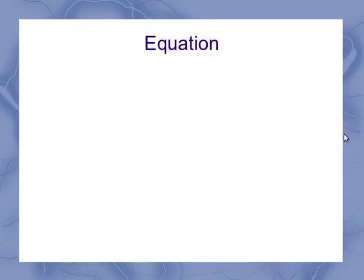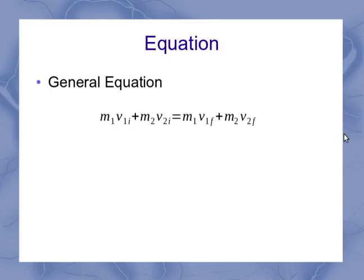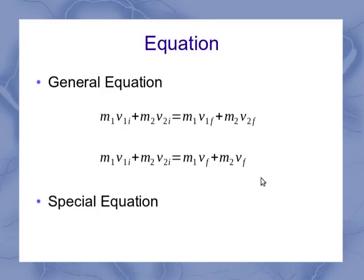So now we can take a look at the equation. I'm going to start with the general equation. And again, this is the general equation for a two-body collision in one dimension. Now my V1F and my V2F over here are the same quantity. So we can replace that with just a single VF in that equation. And because it's the same VF on both of those terms, I can get my special equation where I factor that out.